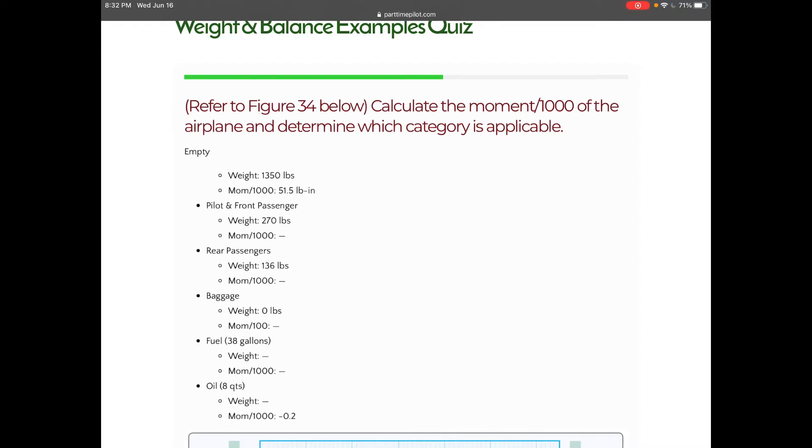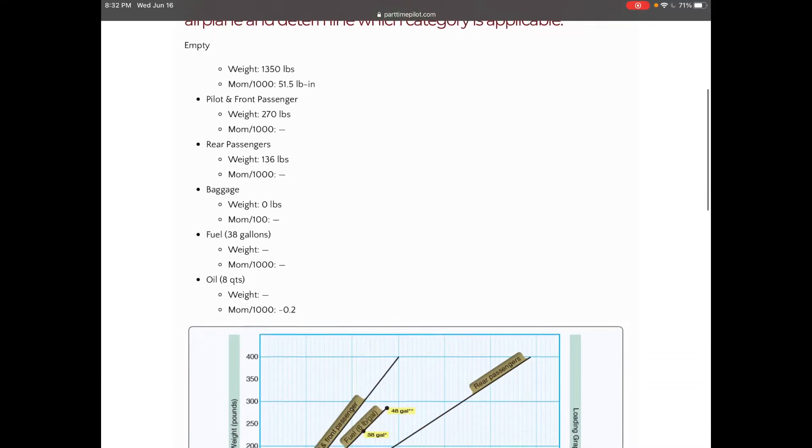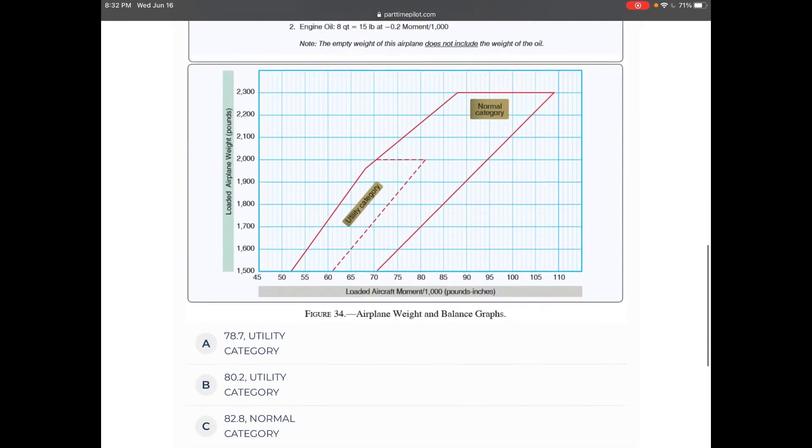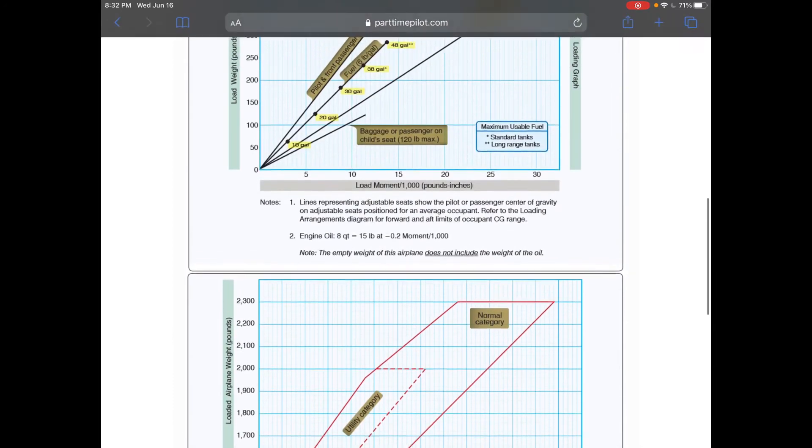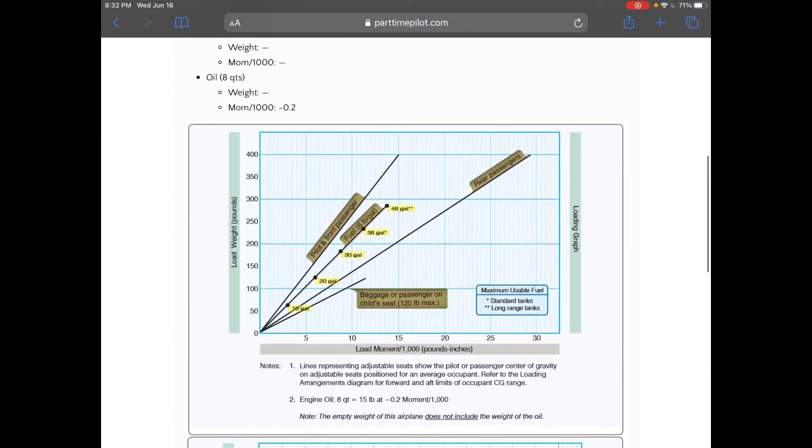We're going to add up all the weight, we're going to add up all the moment, and then we're going to find the CG. On the FAA written, the FAA is going to give you Figure 34, which puts it in graphical form. So they don't give you the arm or the distance from that reference point; instead they give you these lines.